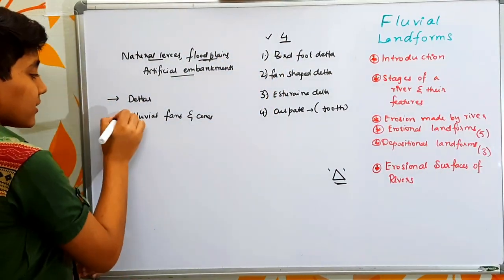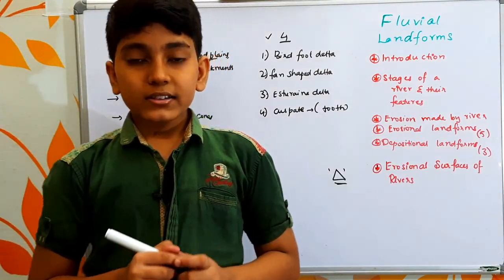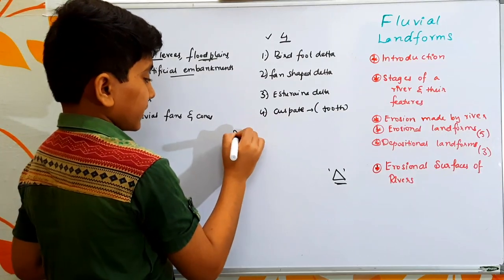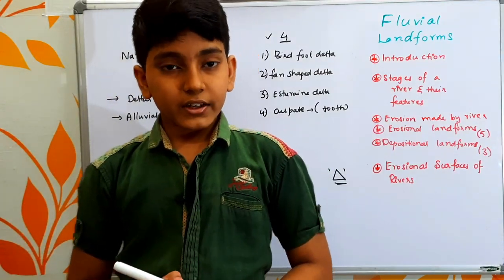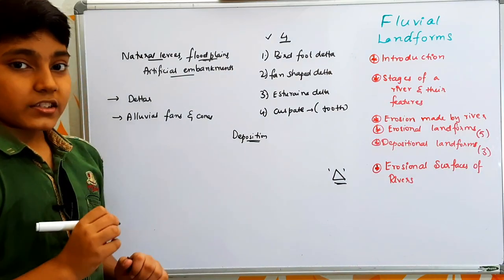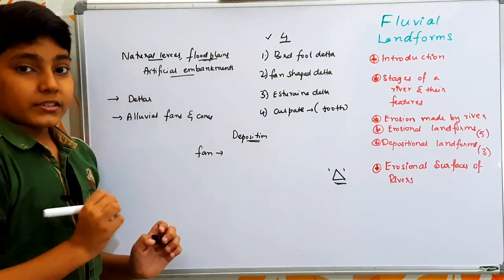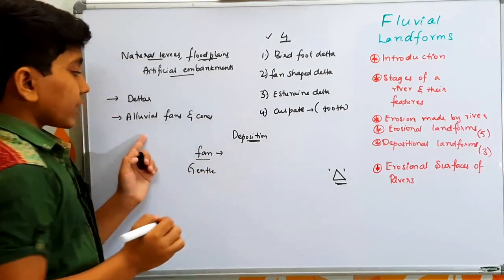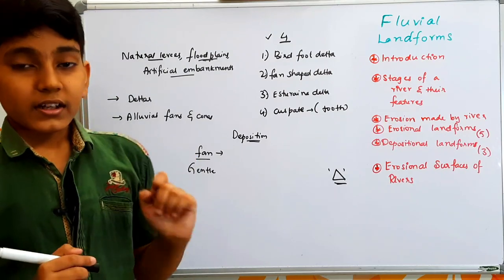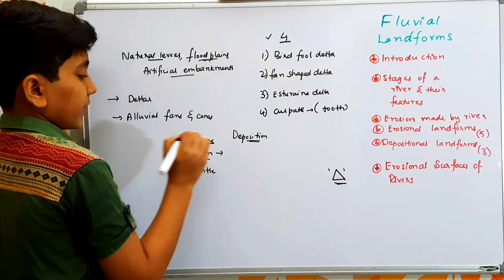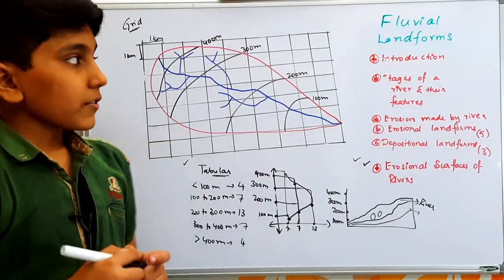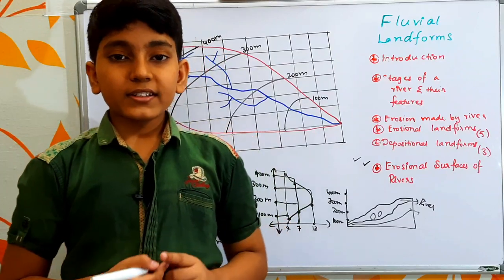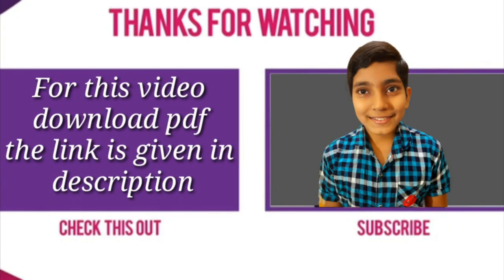Finally, alluvial fans and cones are depositional landforms formed at the mouth of the river. When deposition occurs on a gentle slope in the shape of a fan, it is called an alluvial fan. If the same deposition occurs in a conical shape, it is called an alluvial cone. This concludes our discussion of fluvial landforms. We will discuss aeolian landforms in the next class. The PDF notes of this video are in the description below — please like and subscribe. Thank you.